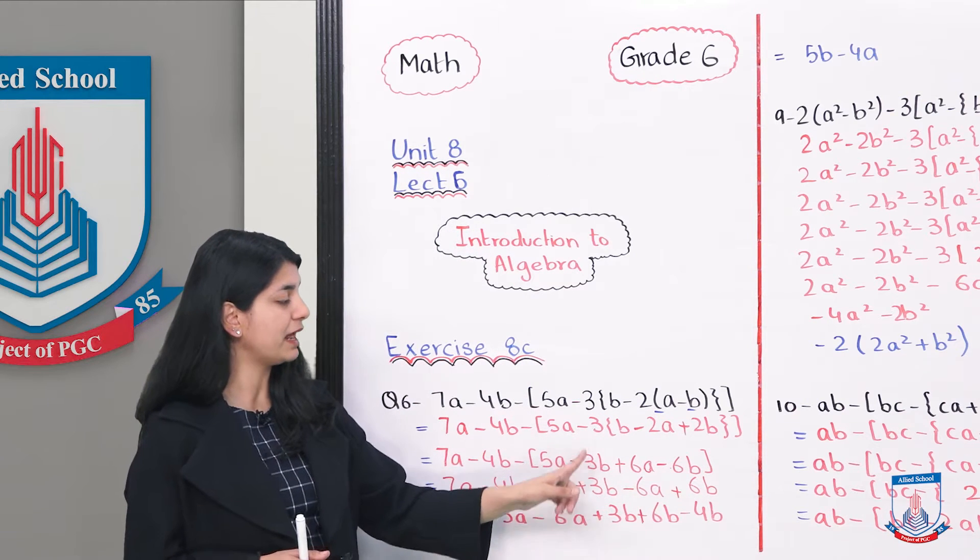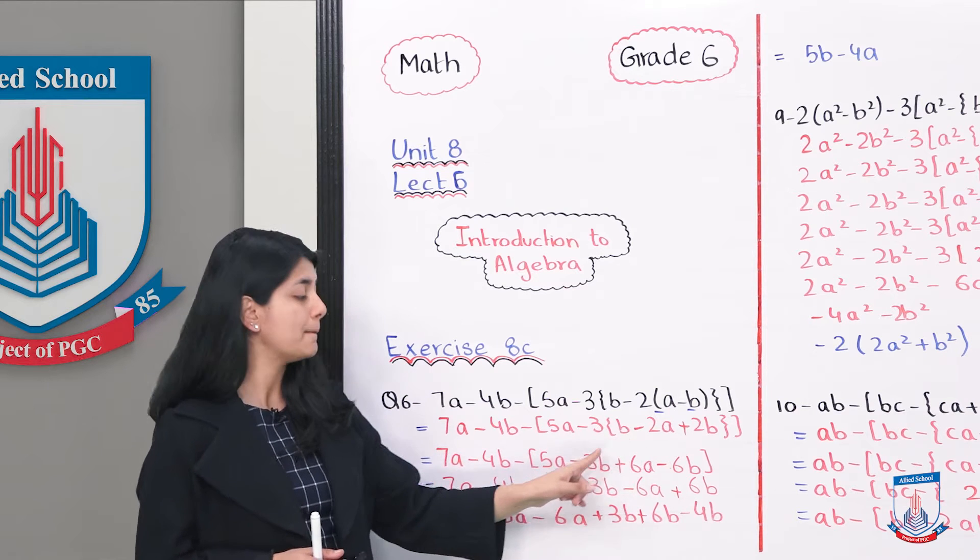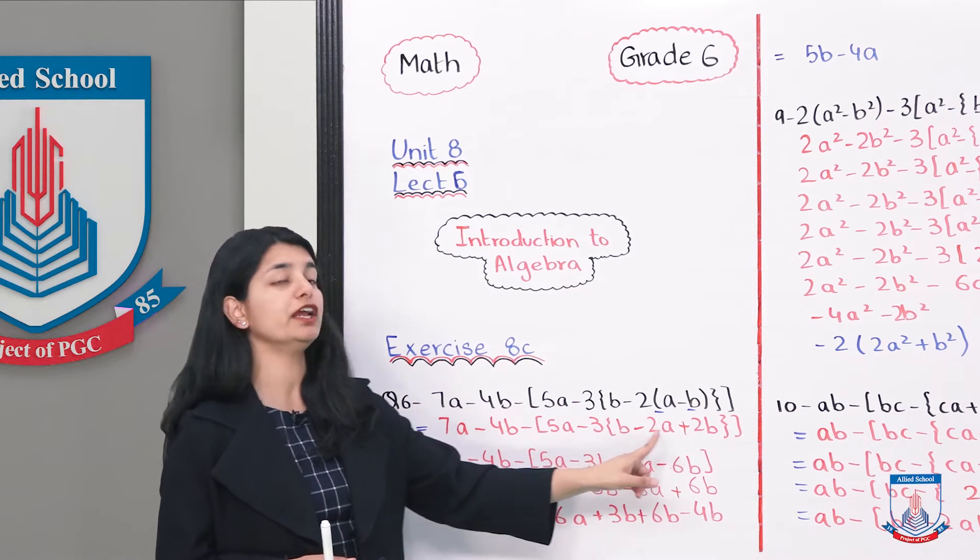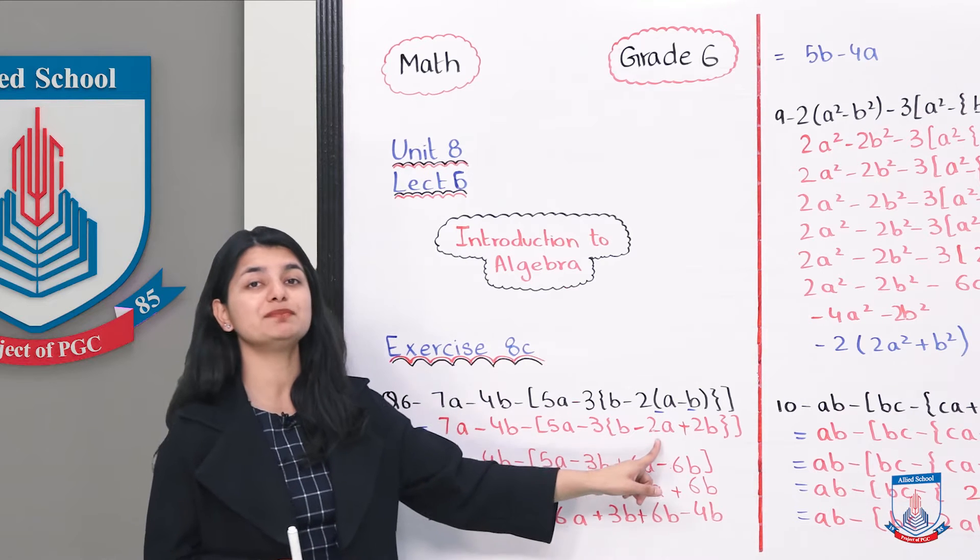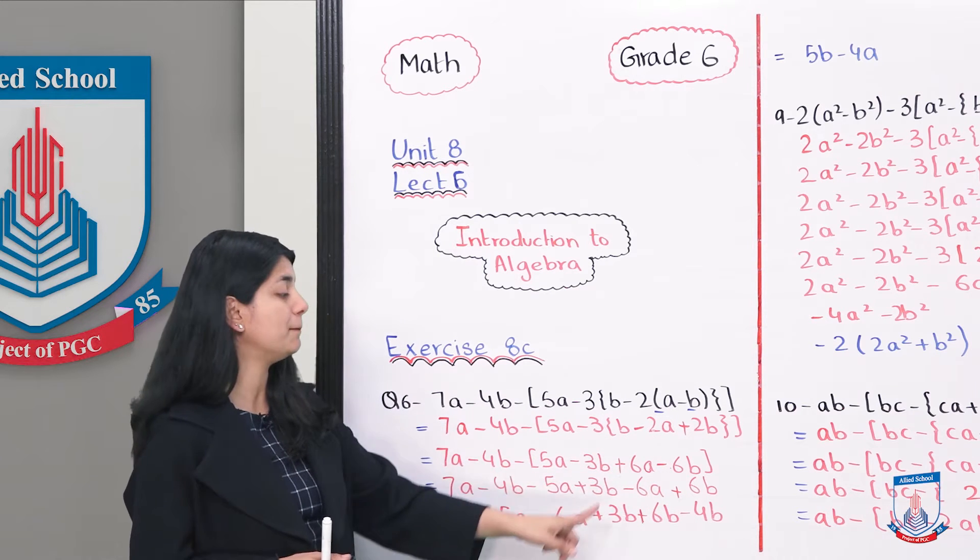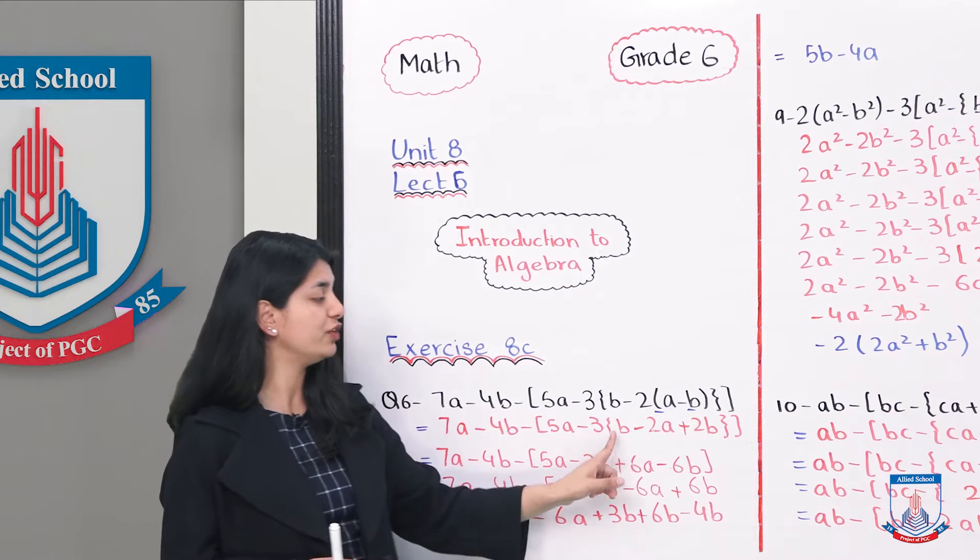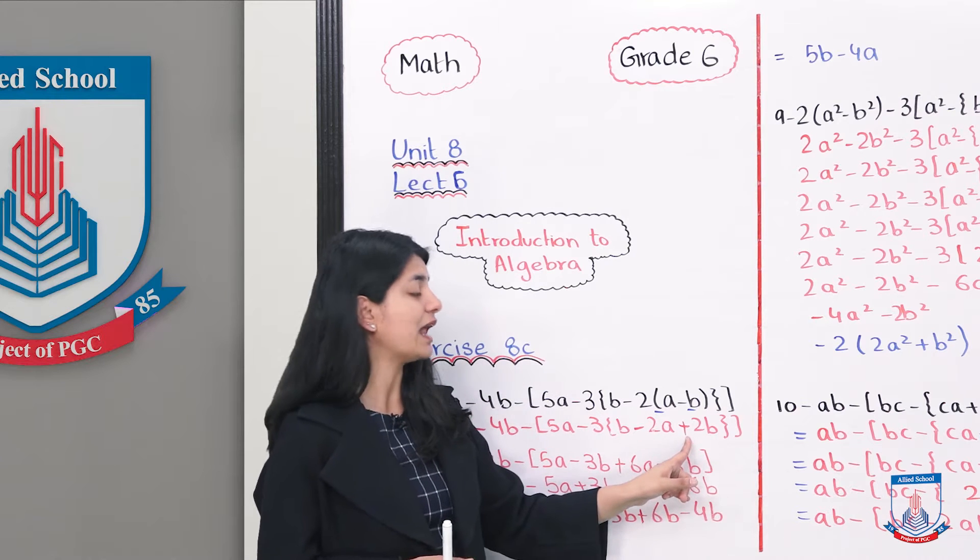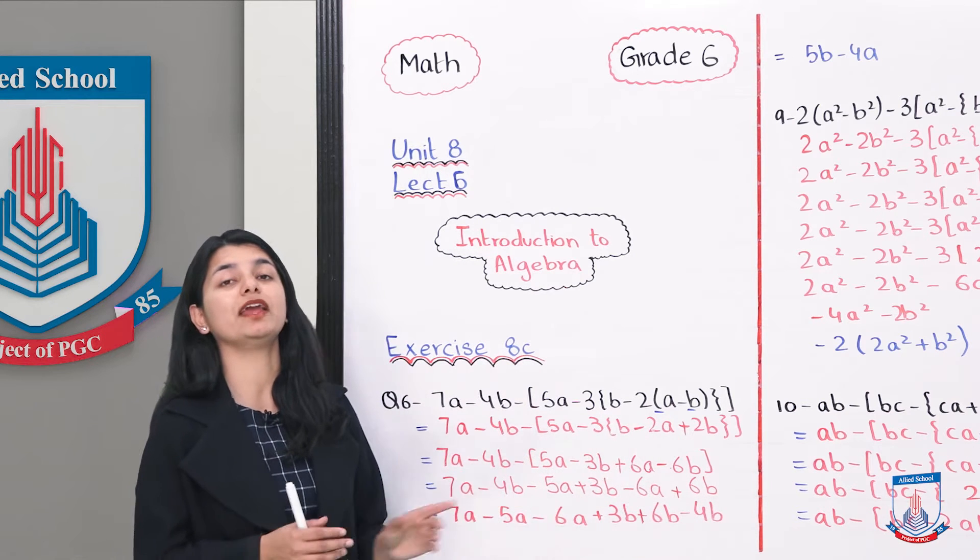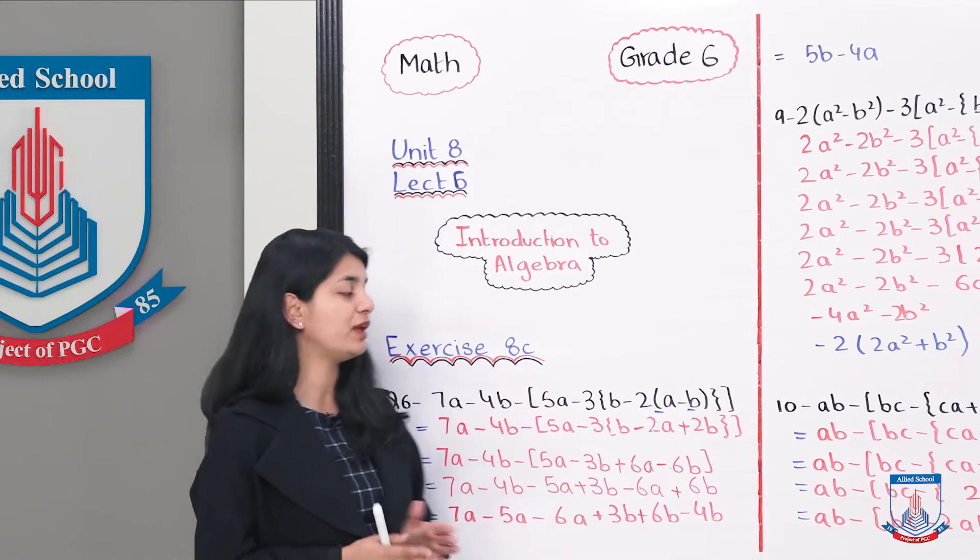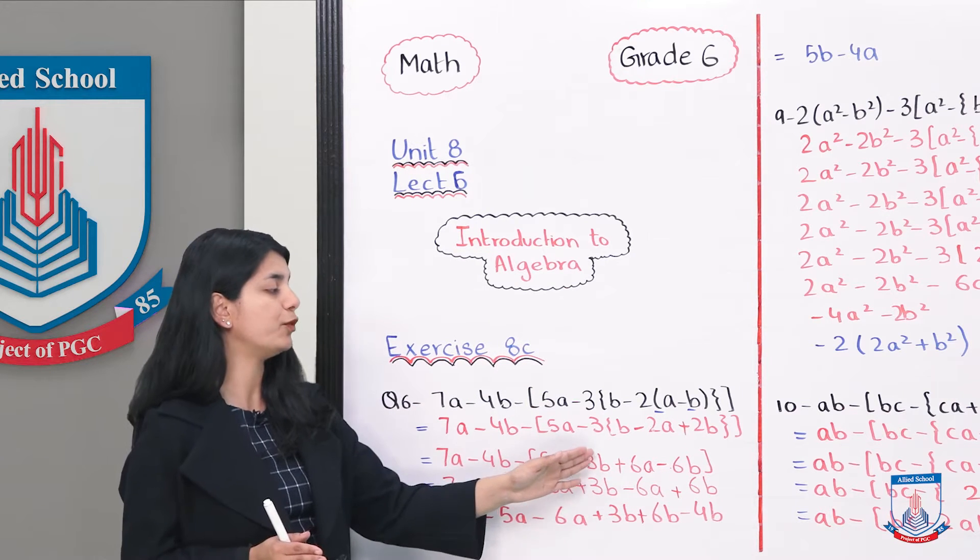So uska tariqe yeh hai that you will B and 2B is 3B minus 2A. Is tarah se humne isko express kar diya. And now we are going to multiply 3 with everything that is inside our bracket. Agar ab hum 3 se multiply karayen. To 3 into B is minus 3B. Then 3 into minus 2A minus or minus jahe wo plus ban jayenge. So humara paas aajayega plus 6A. And then 3 into 2 again is 6 and plus and minus are what? They are minus. So we have minus 6B.